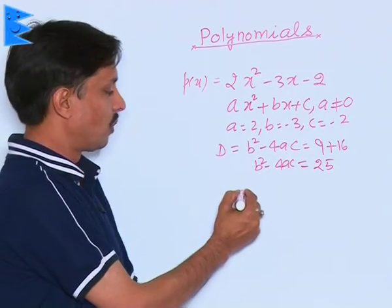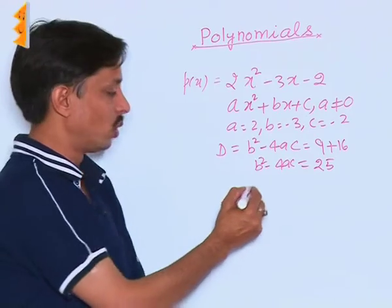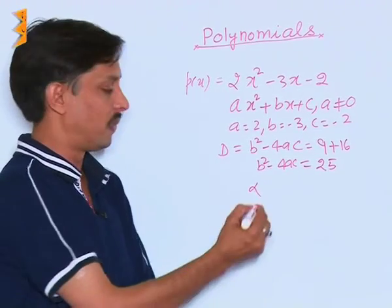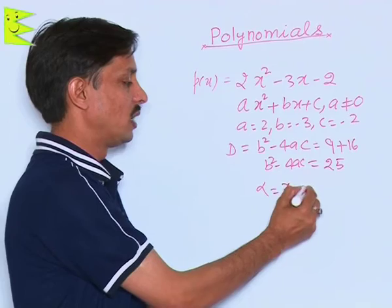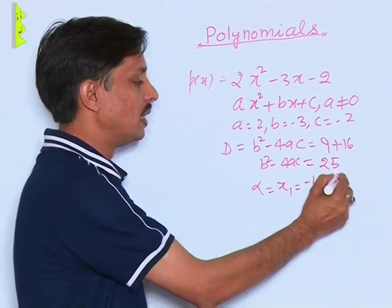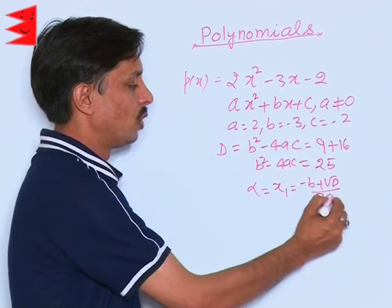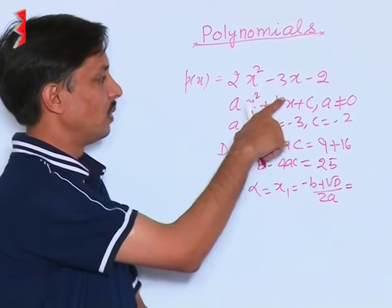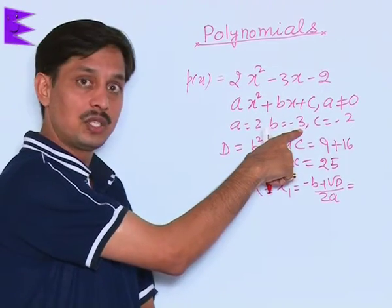What is the formula for finding the two zeros? One of the zeros is symbolically named alpha, or you can say x₁, and formula is (-B + √D) / 2A. What is -B? We have B as -3.